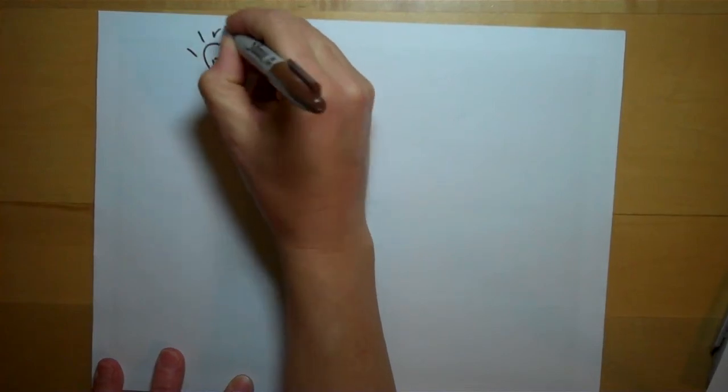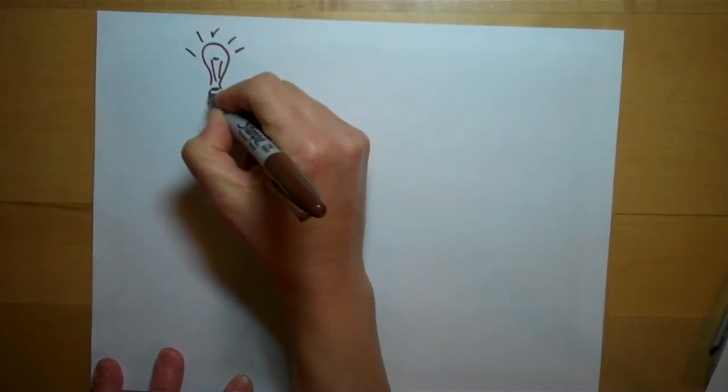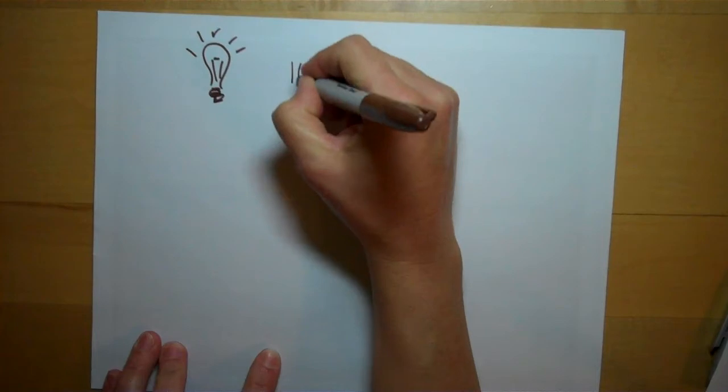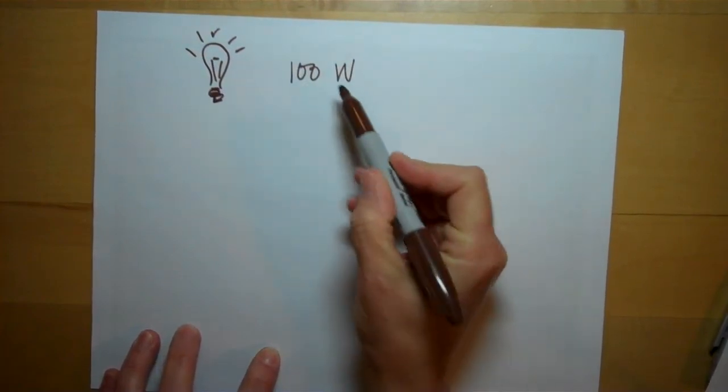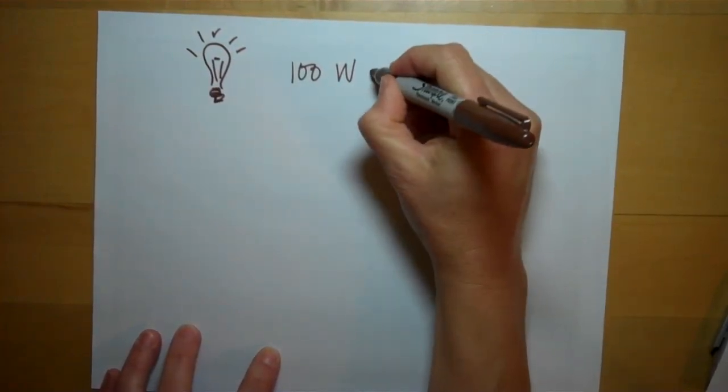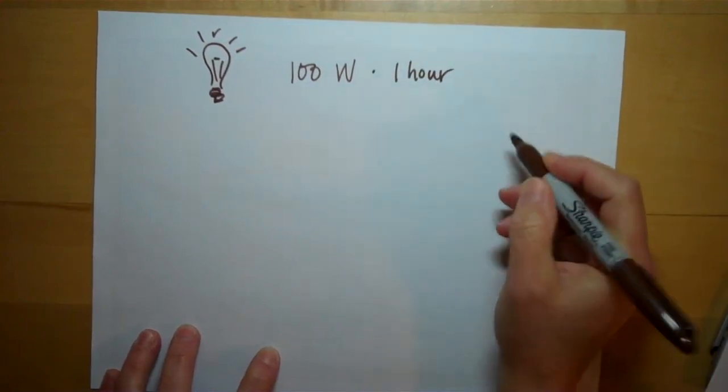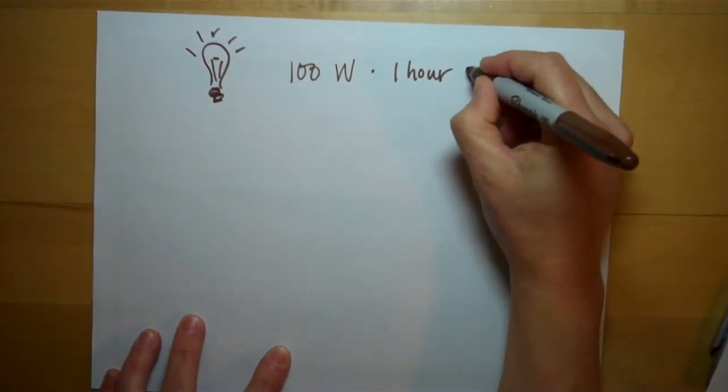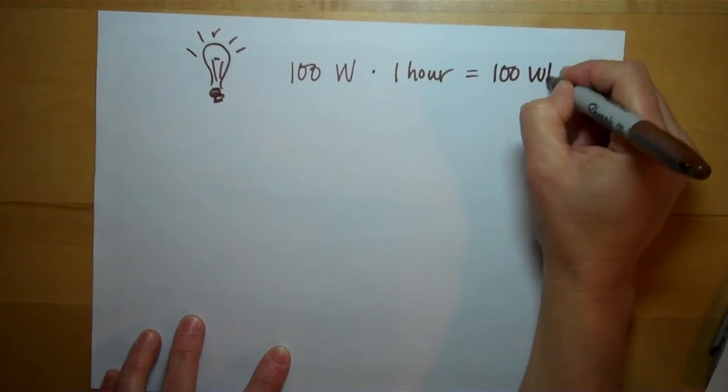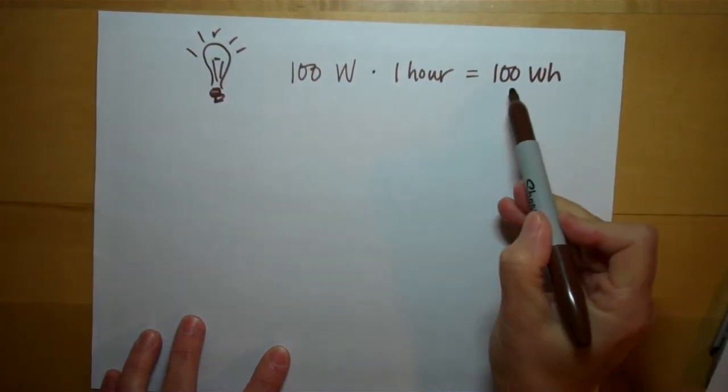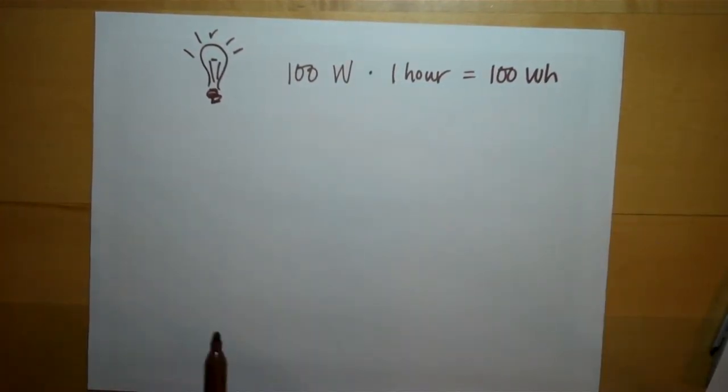Our old-fashioned incandescent light bulb that you shouldn't have in your house anymore. Say this thing needs 100 watts, and say you run it for one hour. You have it burning in your house. You have used a total of 100 watt-hours of energy.